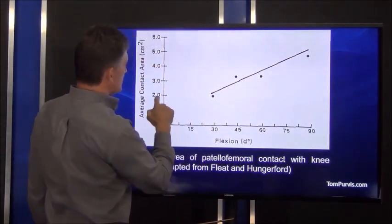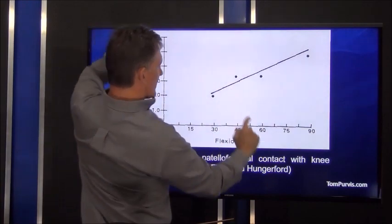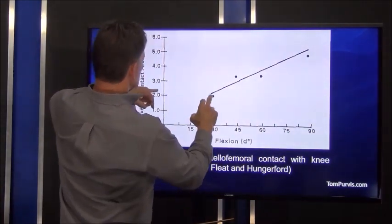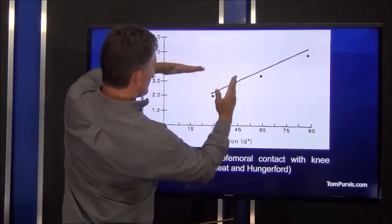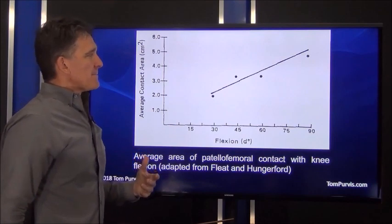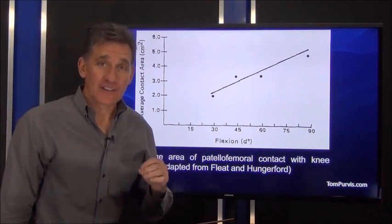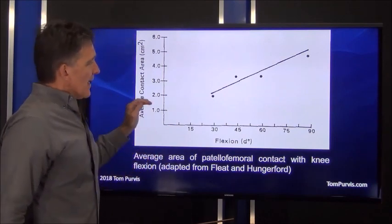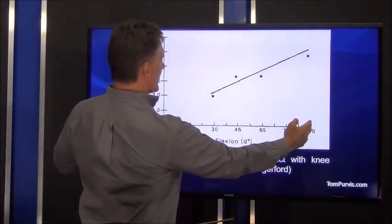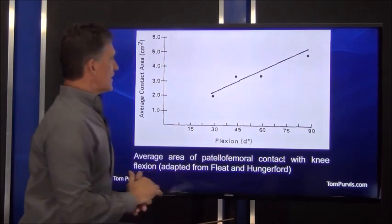So there's the dots for 30 degrees, 45 degrees. They did a 60, they did a 90. And there's the surface areas that correspond. And so roughly that would be for the knee they looked at, that would be the increase in degrees of flexion compared to surface area increase.